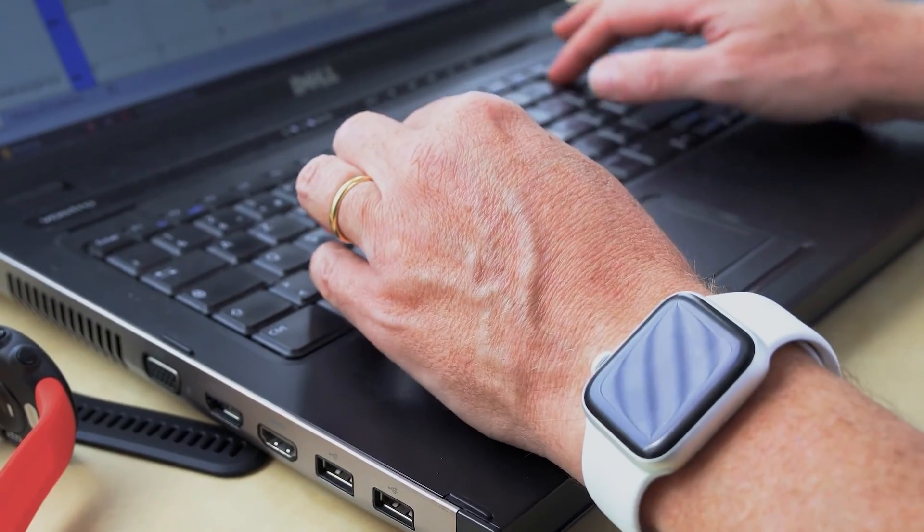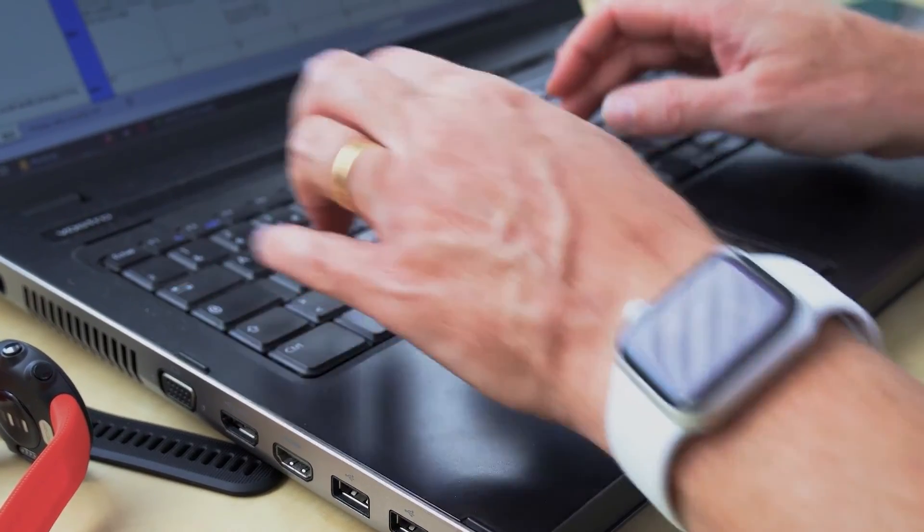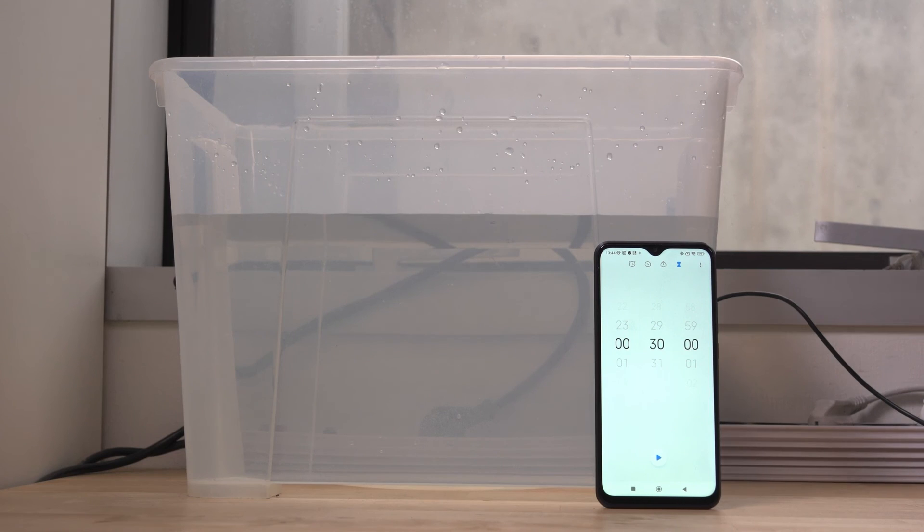Next, we assess how comfortable the watch is to wear, how easy it is to set up and use, and its smart functions like calling and texting. These tests aren't much to look at, so we'll skip past them to the durability section.